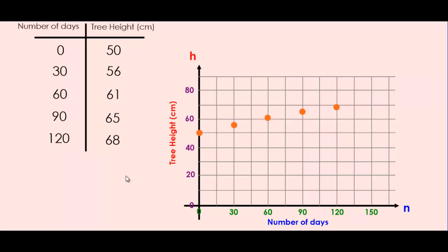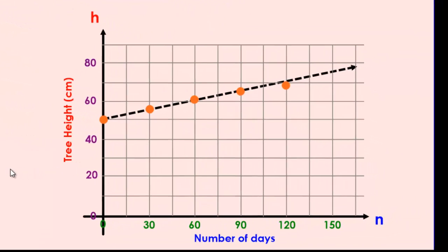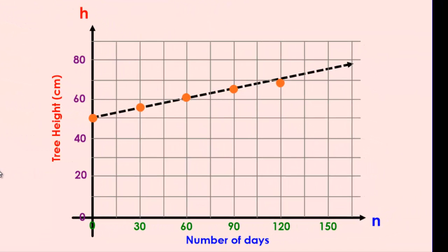Let's draw a line of best fit now. You can see that our line of best fit connects through most of the dots, but doesn't quite connect perfectly through all of them. So although we would consider our relationship to be linear, it's not perfect.